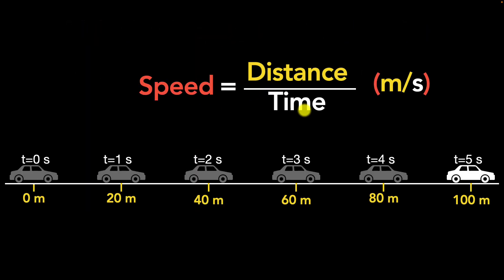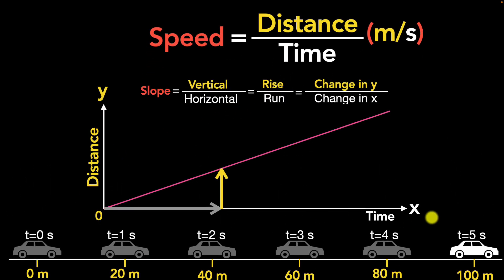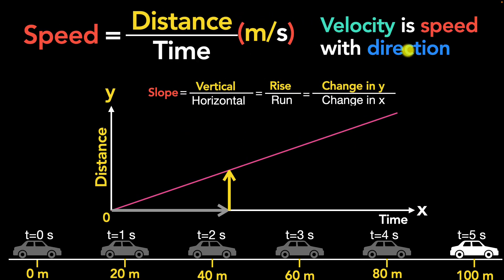Putting it all together: speed is defined as distance divided by time, with a unit of meters per second — it's a measure of how fast something is moving. On a distance-time graph, the slope, which is the vertical divided by the horizontal, represents the speed. And velocity is just speed with direction.